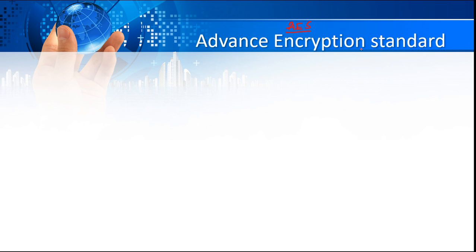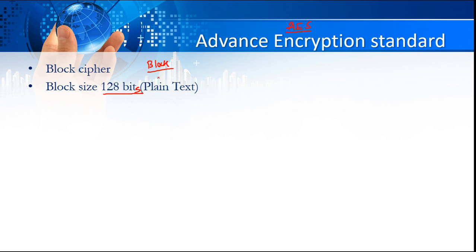This AES encryption standard is actually better or more secure when we compare it with the DES. AES is a block cipher, meaning that the encryption and decryption will be applied on blocks. The block size when we talk about AES is going to be 128 bits. It will make blocks of 128 bits and the process will continue on each block — that's why it is called a block cipher.